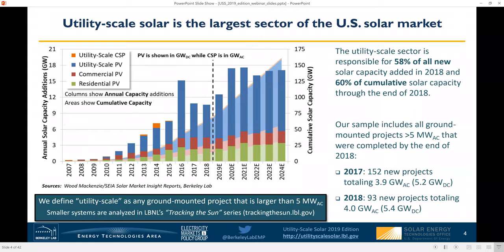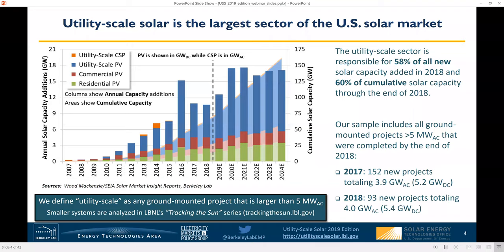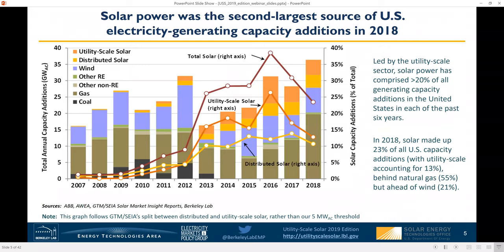Taking a quick look at the overall solar market in the U.S., here we see the deployment history of solar going back to 2007, along with projections out through 2024 from Wood Mackenzie and SIA. Utility-scale solar — shown in blue for PV and orange for CSP — has been the largest segment of the overall U.S. market since 2012, and is expected to remain so through at least 2024, with roughly 10 to 12 gigawatts of new utility-scale capacity projected annually. For purposes of this report, we define utility-scale as any ground-mounted project larger than 5 megawatts of AC capacity. Smaller projects are covered in our companion report series called Tracking the Sun, at trackingthesun.lbl.gov.